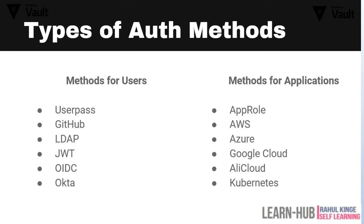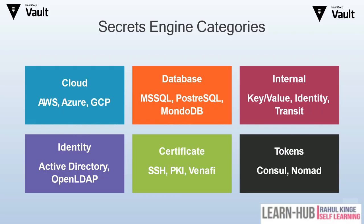Authentication defines how a user or application will log in. For users, there are auth methods like username/password, GitHub, LDAP, and JWT. For applications, there are methods like AppRole, AWS token, and others. For secret engines, there are cloud options like AWS and Google Cloud, database engines, and internal engines like KV, identity, and transit. Transit is used for encryption, and there are also token and certificate engines.